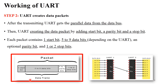This is the structure of the packet. The packet carries different bits: one start bit, five to nine data bits, zero to one parity bits, and one to two stop bits. Each of these will be explained in detail.